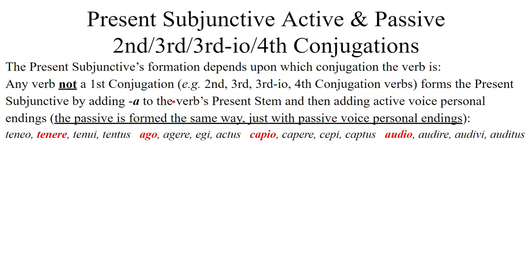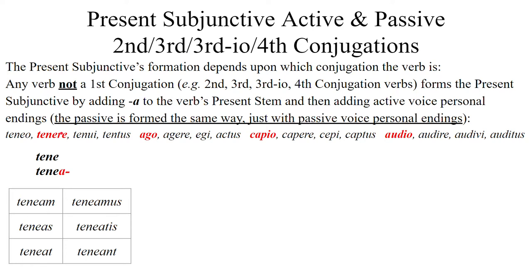For example, starting with a second conjugation verb: teneo, tenere, tenui, tentus. For teneo, you find the present stem the same way as the first conjugation — go to the second principal part tenere, chop off the -re — then add A to the stem. So we get tene- as the stem, and add the personal endings: teneam, teneas, teneat, teneamus, teneatis, teneant. For the passive, exchange the active endings for passive endings: tenear, tenearis, teneatur, teneamur, teneamini, teneantur.